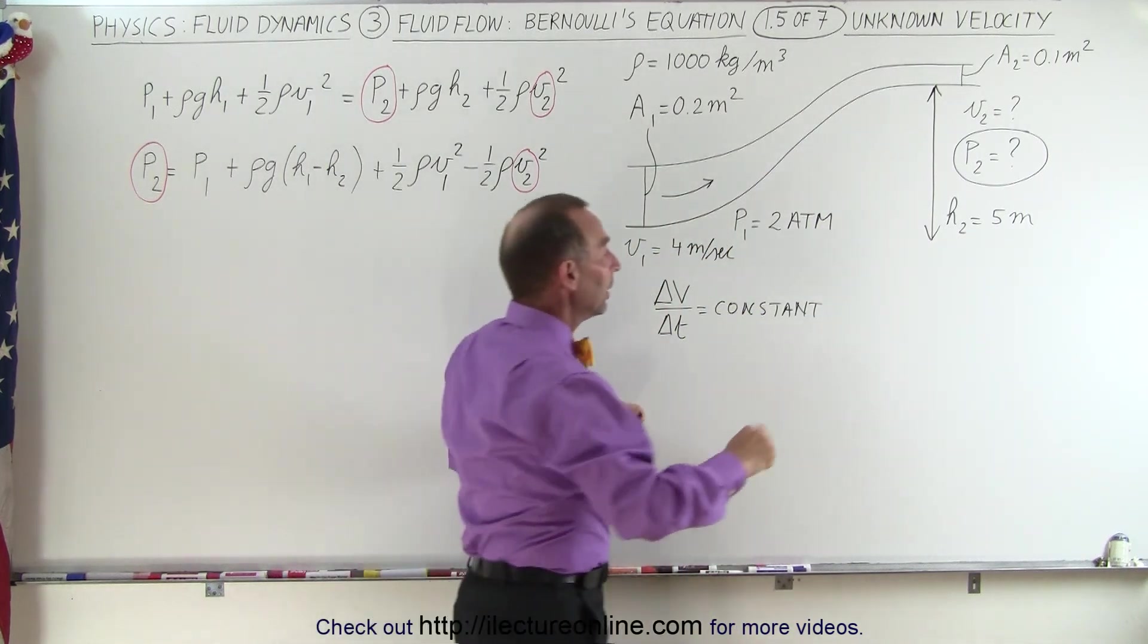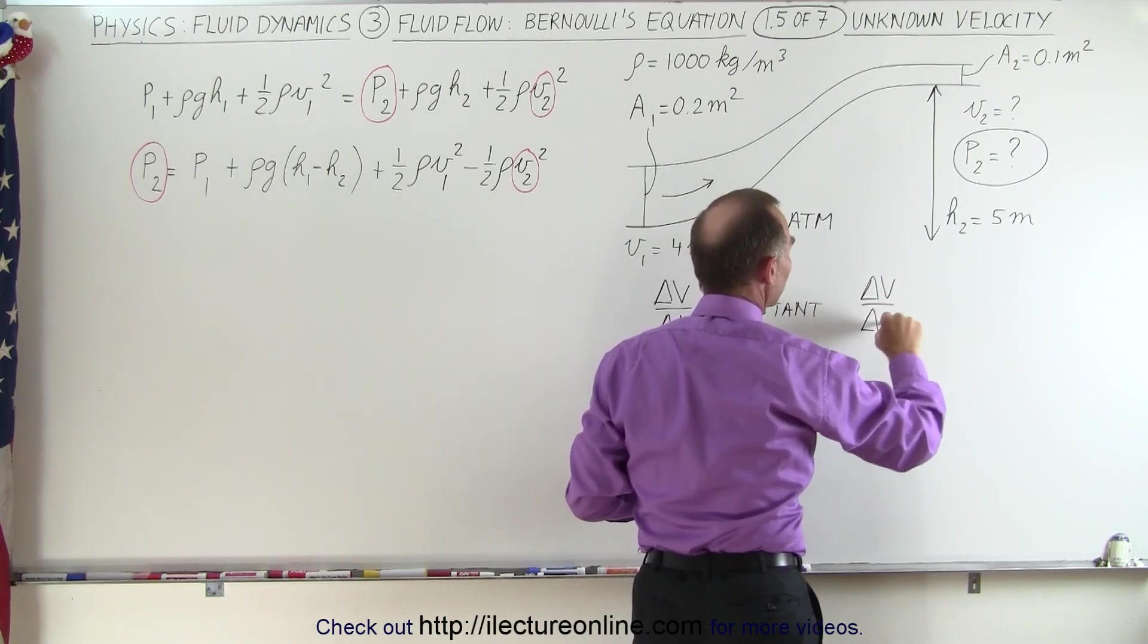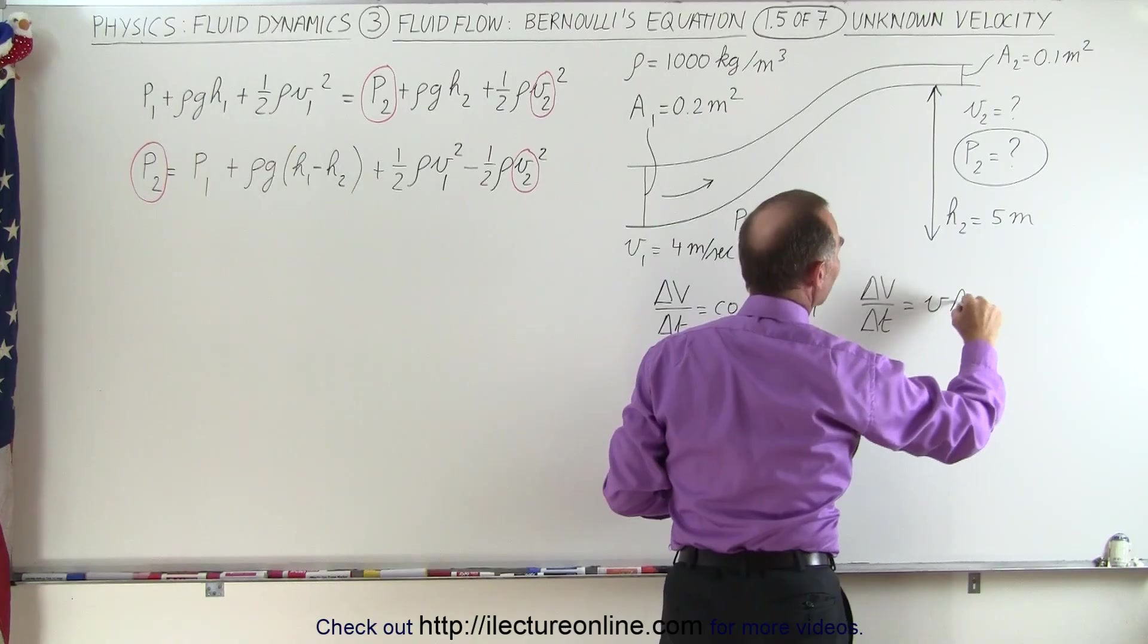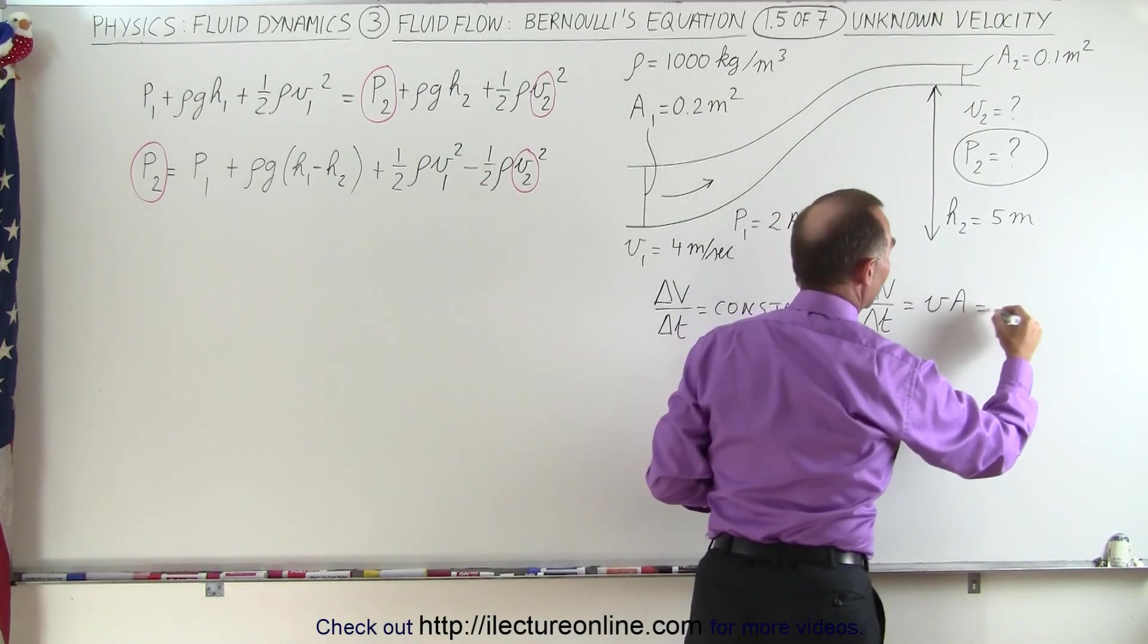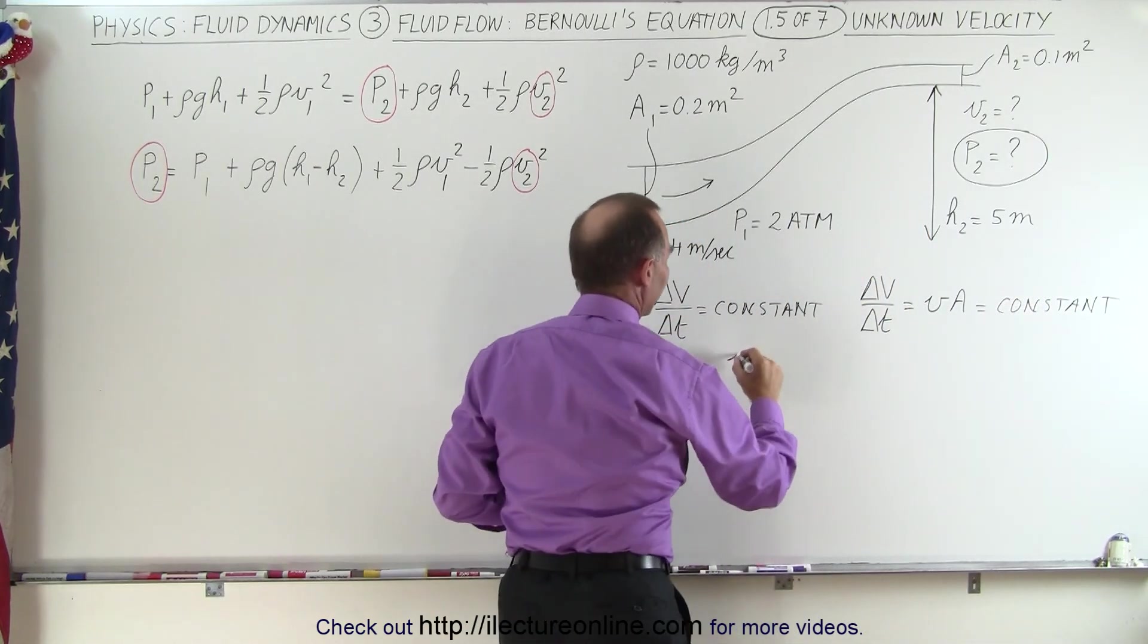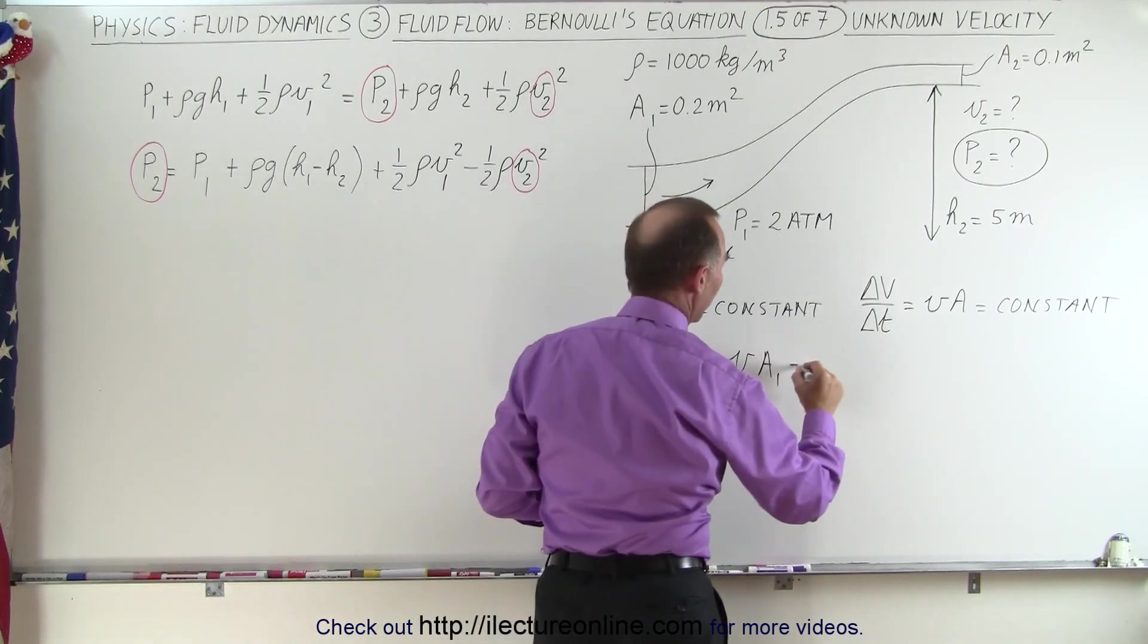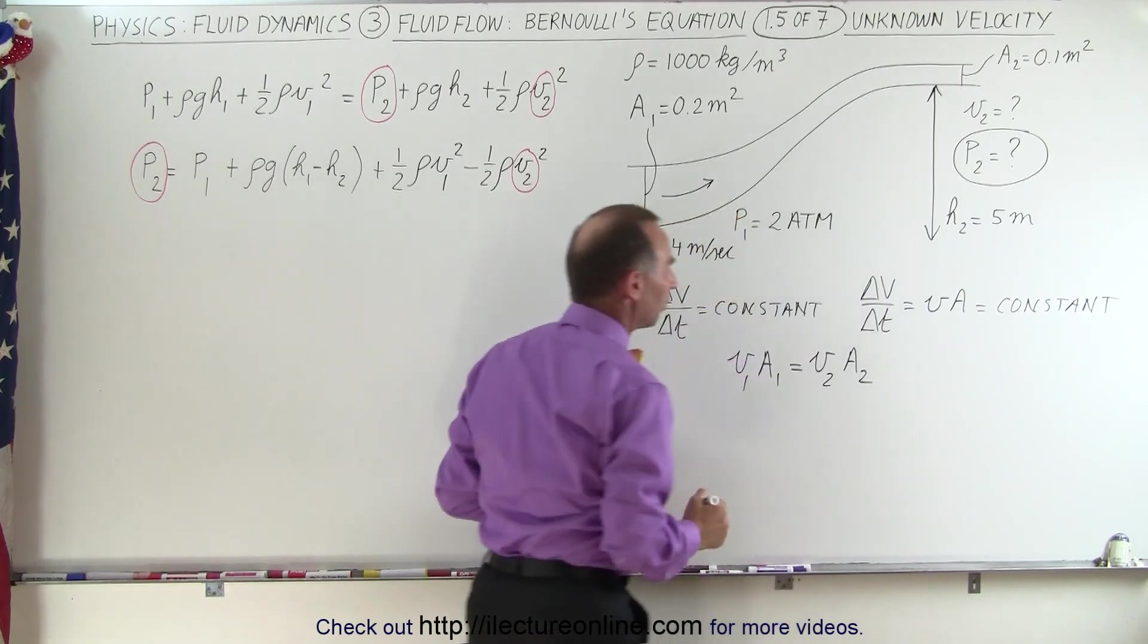We also know that the amount of fluid flowing through the pipe per unit time must be equal to the velocity times the cross sectional area. And since that has to be equal to a constant, we can then say that the velocity at point 1 times the cross sectional area at point 1 must equal the velocity at point 2 times the cross sectional area at point 2.